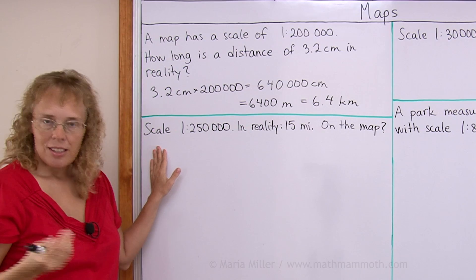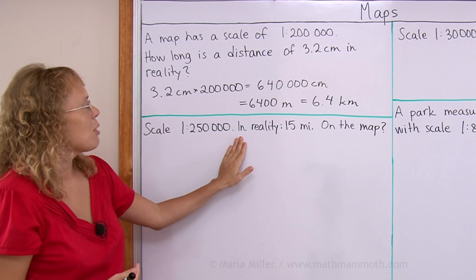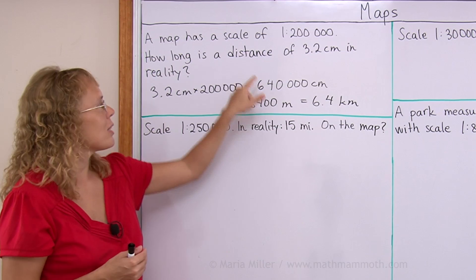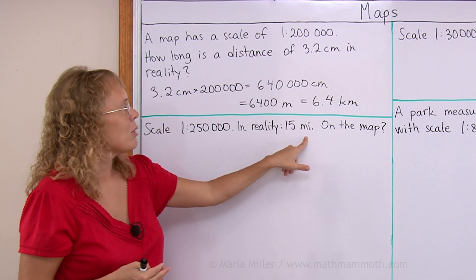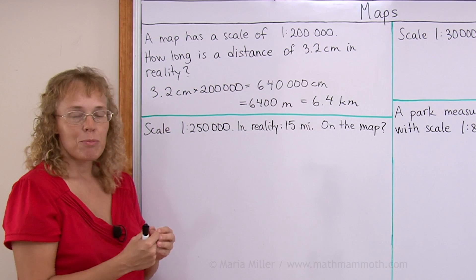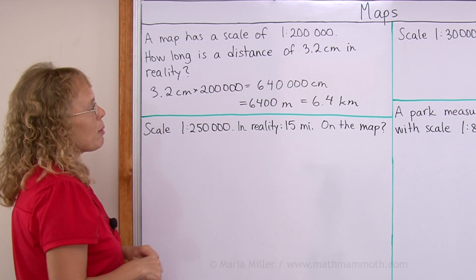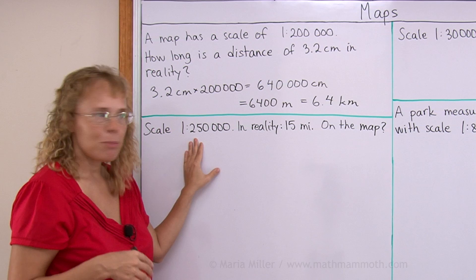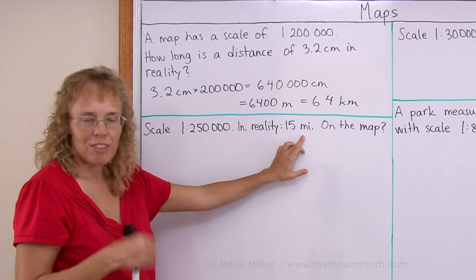Over here the map has a scale of 1 to 250,000. And we have a distance that in reality measures 15 miles. And how long would it be on the map? Now this is a little bit more complicated calculation than what we had here because it is customary units, it's not metric units. We need to change miles into feet into inches because on the map you want to tell somebody that it's gonna be so many inches on your map. The basic idea is the same that one unit on the map corresponds to 250,000 units in reality. And so each time when we are converting we either multiply by this or divide by this big number. And this time of course we have to divide so we get a really small number.